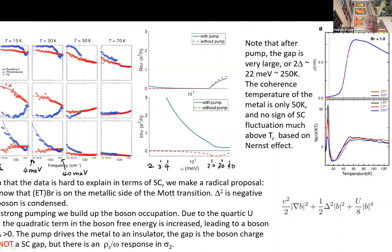To connect with the pump-probe experiments: in a superconductor, the Landau-Ginzburg term is negative due to boson condensation. When we drive the system, we build up boson occupation on the ring in k-space. The theory predicts perfect-conductor response — 1/ω imaginary conductivity — consistent with what Cavalleri's group observes when driving these near-Mott materials, but without requiring true superconducting order.